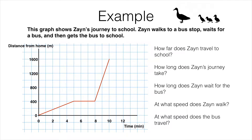In this video we are looking at distance-time graphs. Distance-time graphs have time on the horizontal axis and distance on the vertical axis. Let's take a look at an example.